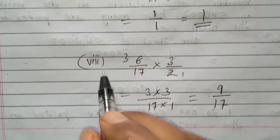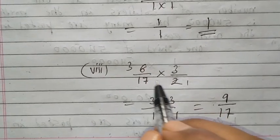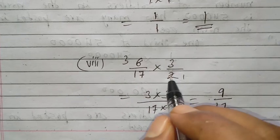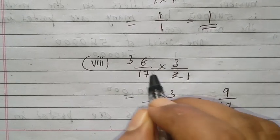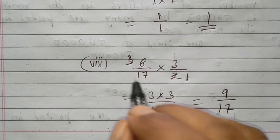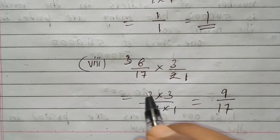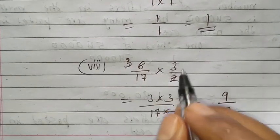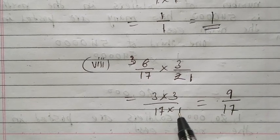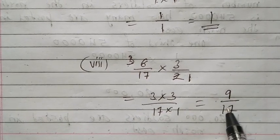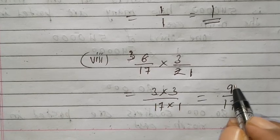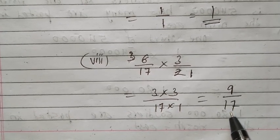Now come to question number 8: 6 upon 17 into 3 upon 17 into 3 upon 2. Try to cancel out: 2 into 1 is 2, and 2 into 3 is 6 — so 6 and 2 cancel. Anything else cancelled? No. So multiply: 3 into 3 upon 17 into 1. 3 into 3 is 9. Answer: 9 upon 17.